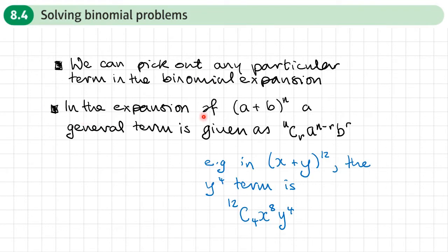In the expansion of (a + b) to the power n, a general term is given by nCr, or (n choose r), times a to the power (n minus r), times b to the power r.